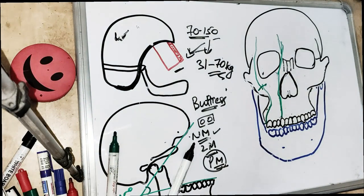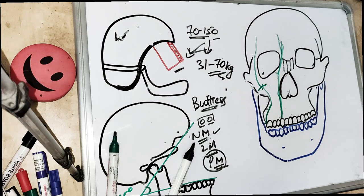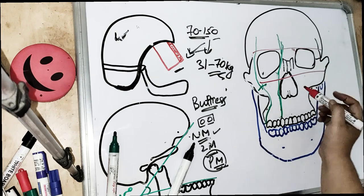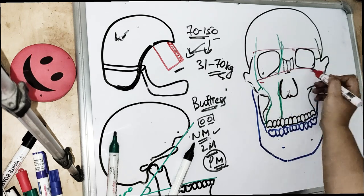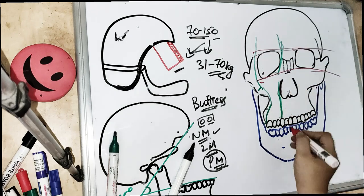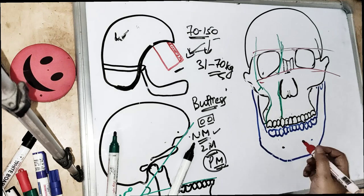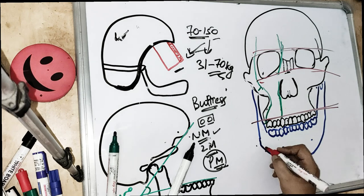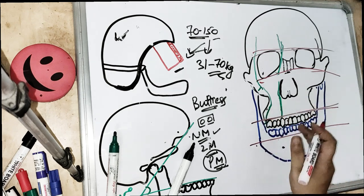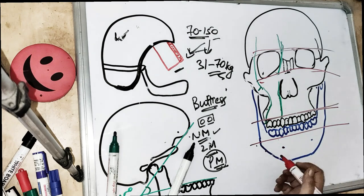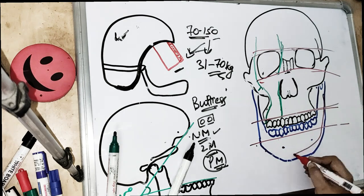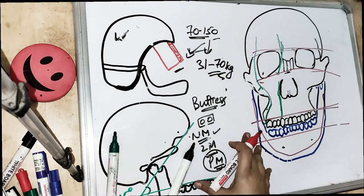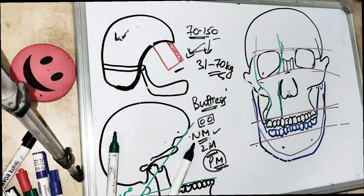We also have horizontal buttresses - the superior orbital, the inferior orbital at the inferior orbit, and also the alveolar process buttress at the alveolar process of the maxilla and the alveolar process of the mandible. There is also a lower transverse mandibular buttress. These are the buttresses - if we are fixing any plates, doing open reduction surgical technique, we are going to fix plates along these buttresses.